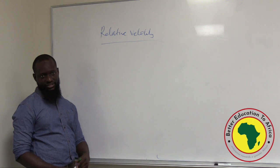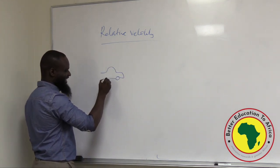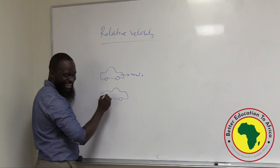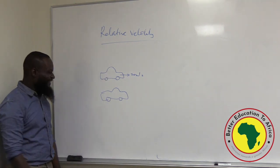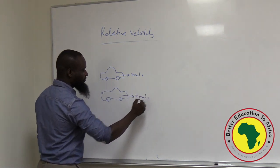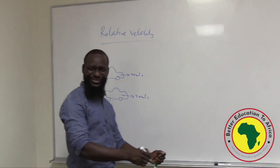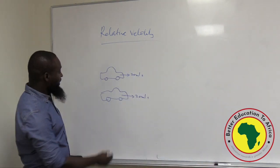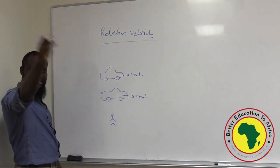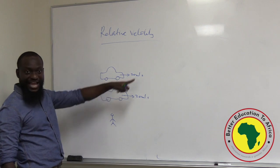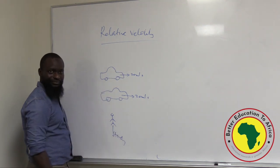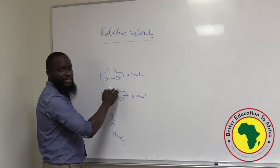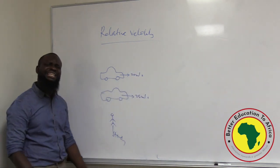When you move, that's how you start taking velocity. If I'm in a car moving at 20 miles per hour and there's another car also moving at 20 meters per second, we'll look at each other as if we're in one place — we'll think we're standing still. So relative to each other, we are stationary. But relative to someone standing by the roadside, they see both of us moving at 20 meters per second. That is what relative velocity is.